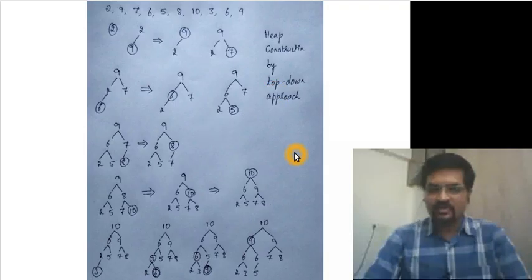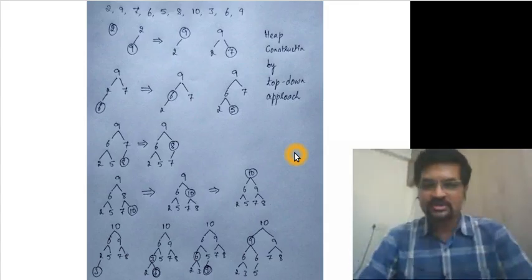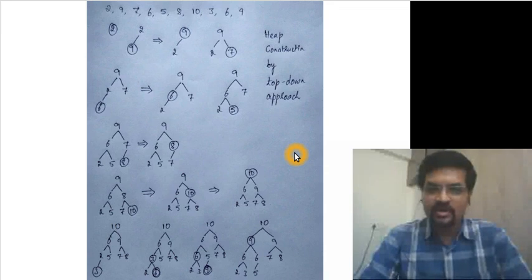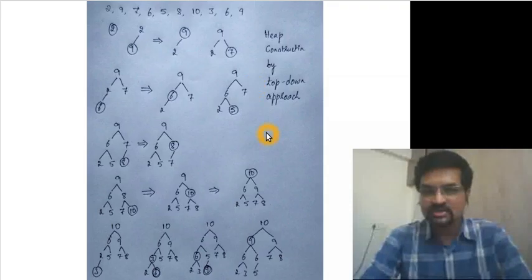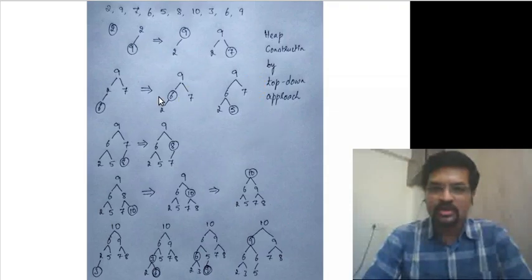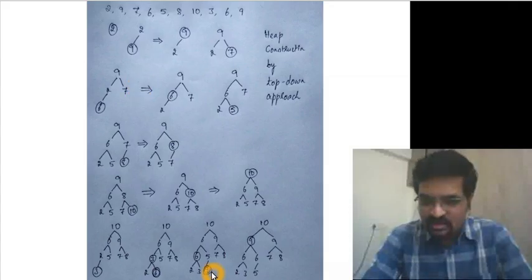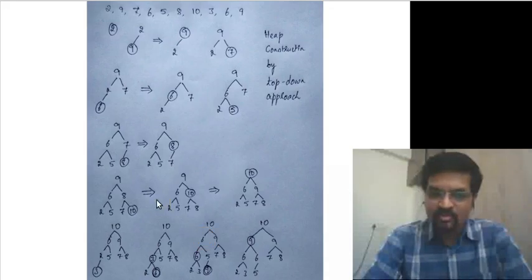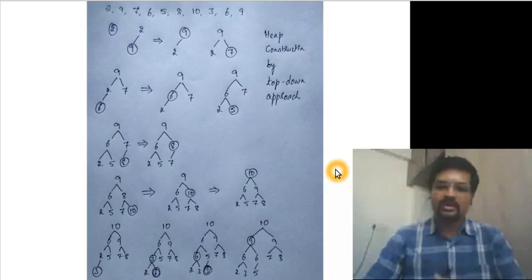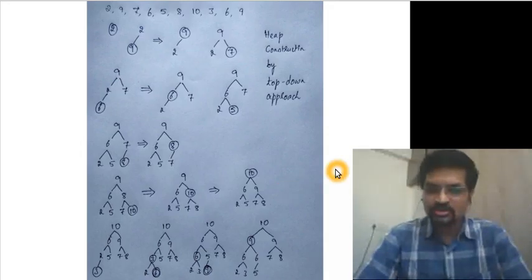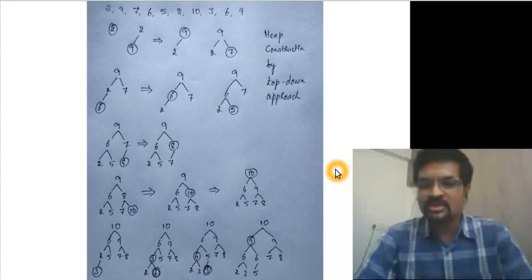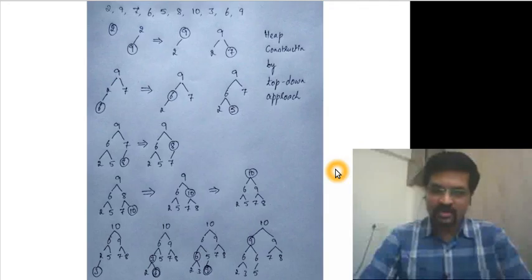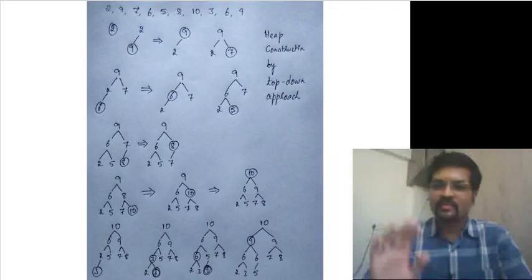For the efficiency analysis: we start with the first element and insert one new element per iteration for n total iterations. In each iteration a new element could trickle up to the root, requiring at most log n swaps. Therefore the time complexity is O(n log n) — more specifically Θ(n log n). A bottom-up approach for heap construction will be covered in another video.